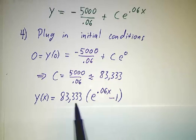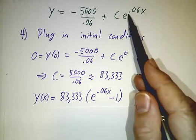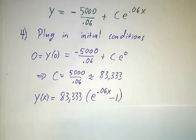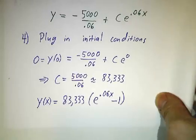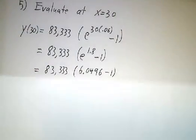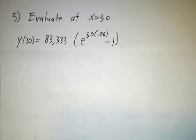And that gives us our solution. y(x) is 83,333 times e to the 0.06x minus 1. Great. So we've got our formula. Now all that's left is to see what happens 30 years from now. We can predict the future once we've got a formula.